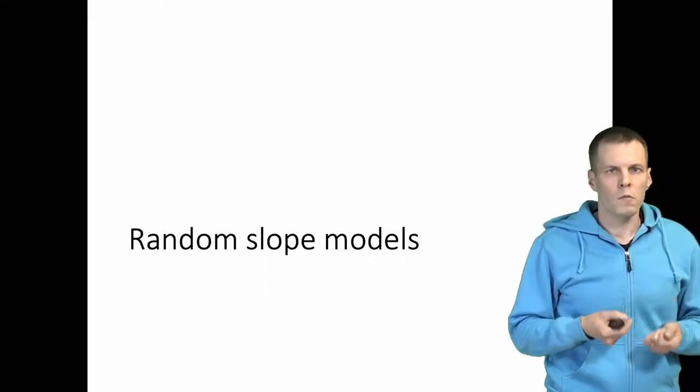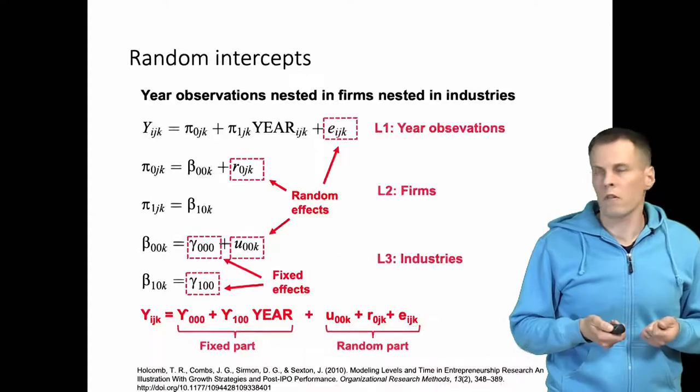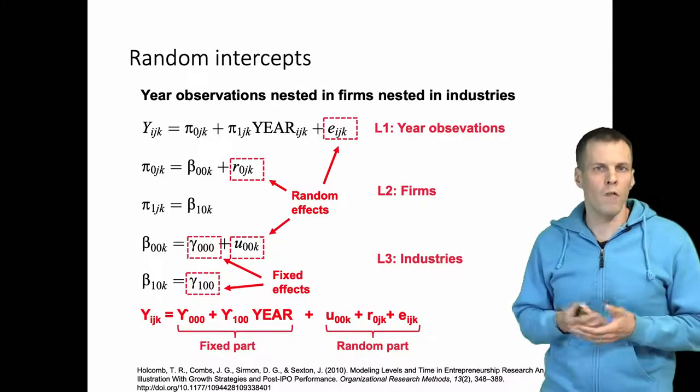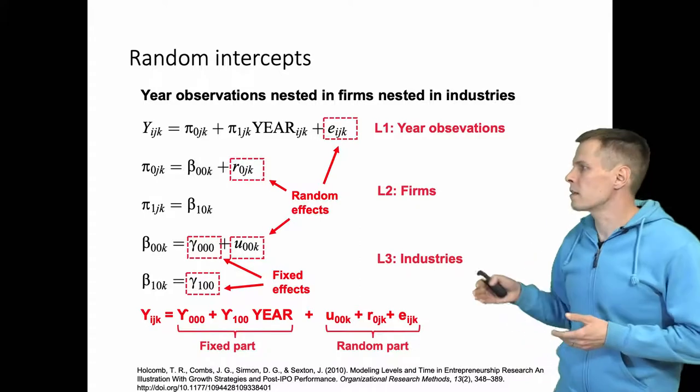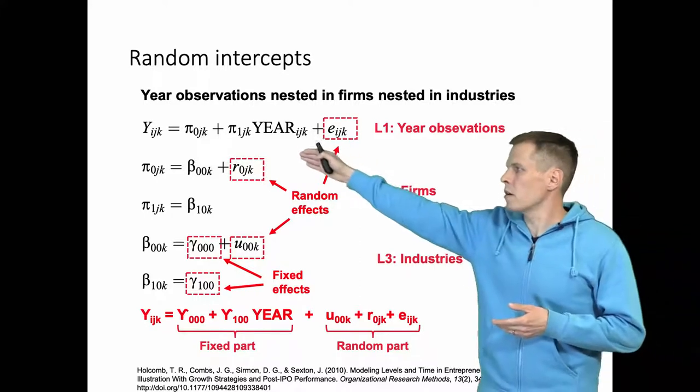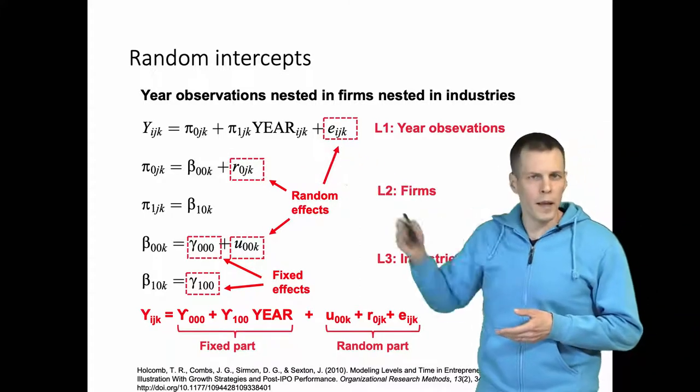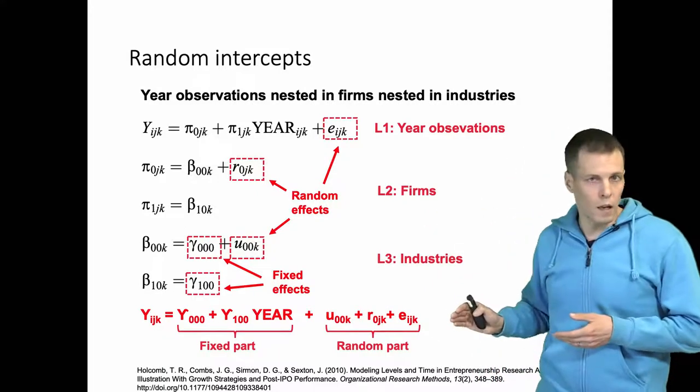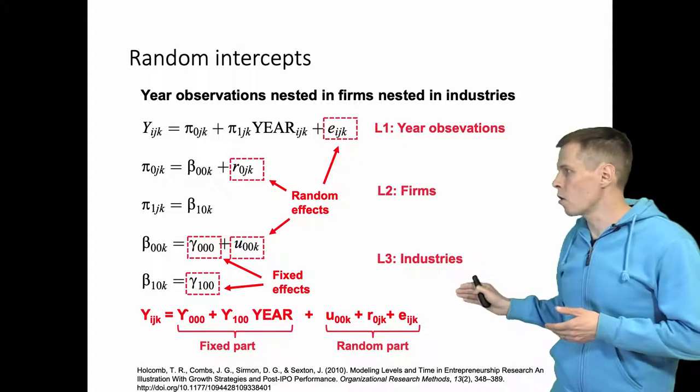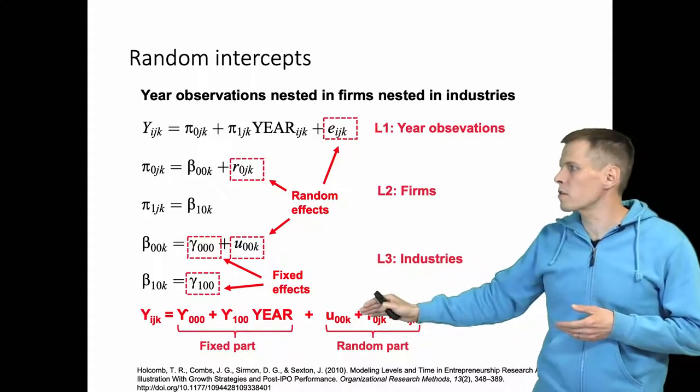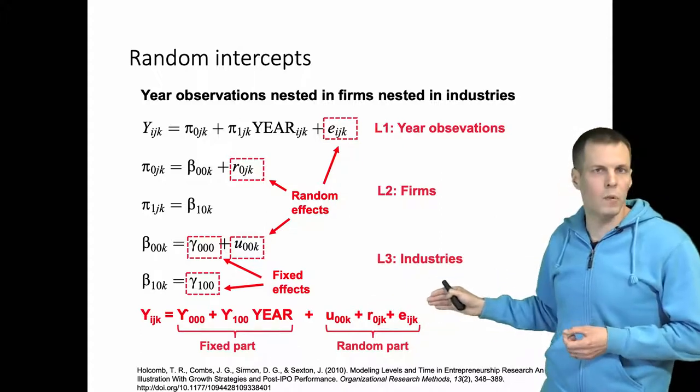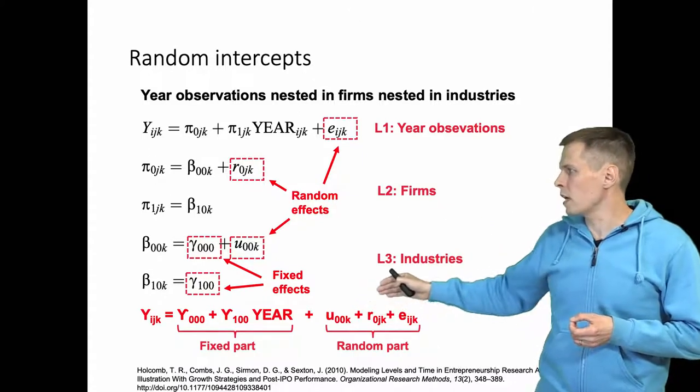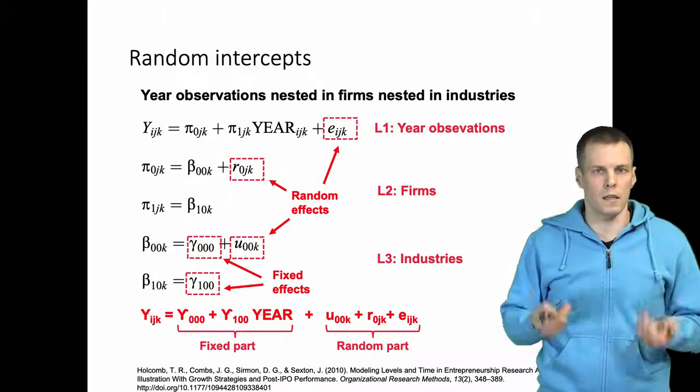To understand random slope models, let's take a look at random intercept models first. The idea of a random intercept model is that we have the intercept, and the intercept varies between firms level 2 and between industries level 3. So instead of having one intercept, we have a different intercept defined for each company and industry called U00K and R0JK in this example.